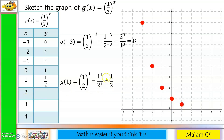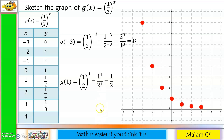For x = 2: 1 squared is 1 and 2 squared is 4, so g(2) = 1 fourth. For x = 3: 1 cubed is 1 and 2 cubed is 8, so g(3) = 1 eighth. For x = 4: 1 to the fourth is 1 and 2 to the fourth is 16, so g(4) = 1 over 16. We plot all these points by subdividing 1 unit accordingly.